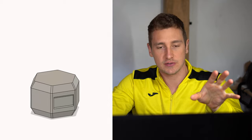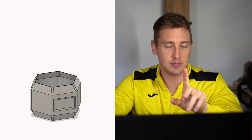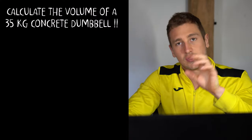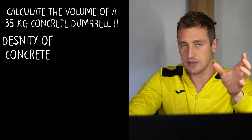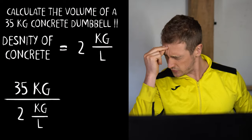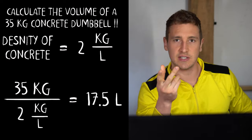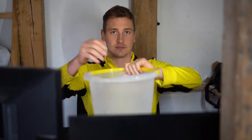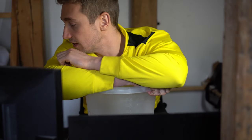You need this information for scaling your dumbbells. I want to build 35 kilogram dumbbells. Using the density of concrete, which is 2, we can scale the dumbbells — which equates to 17.5 liters for one dumbbell. Which is huge, hella big — almost two of these buckets. That's far too big.